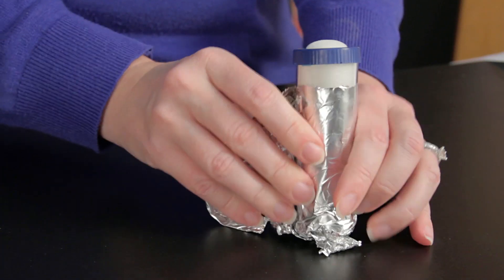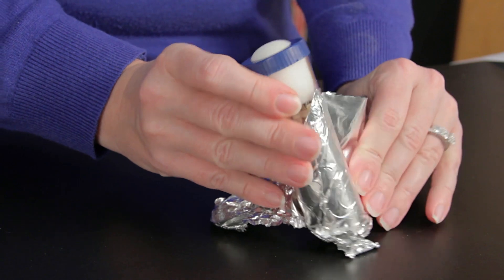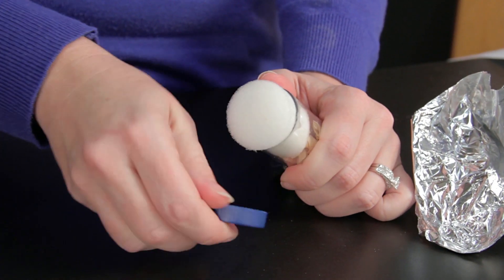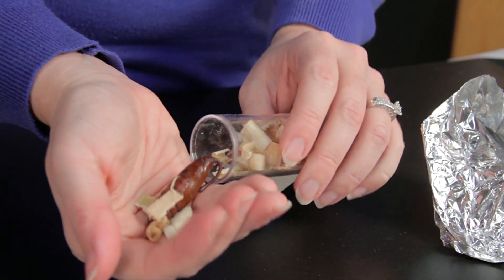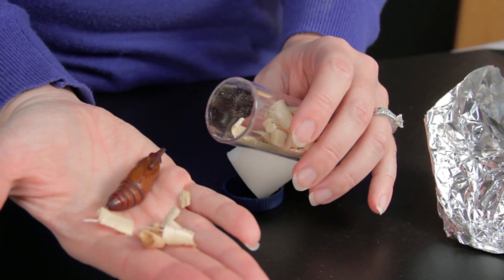After seven days, open the vial and remove the pupa. Place it on a paper towel in the bottom of the Carolina Butterfly Sanctuary. Provide a crumpled paper towel or branch for the moth to climb on when it emerges.